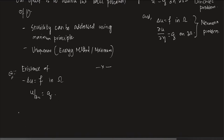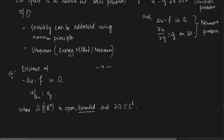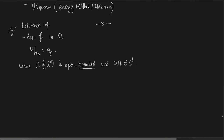Omega is open, bounded — very important — and the boundary del omega is C1. We say the domain is smooth, meaning the boundary is C1, i.e., omega is a smooth domain. What I want to do is find an existence result for this problem.